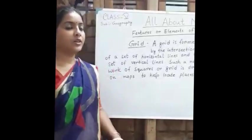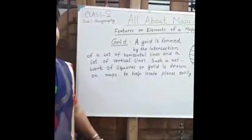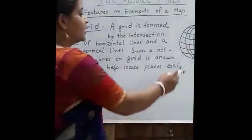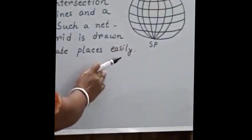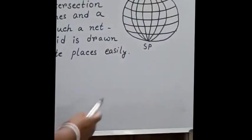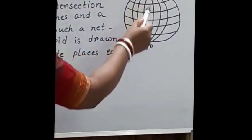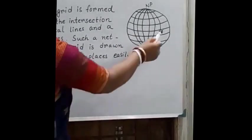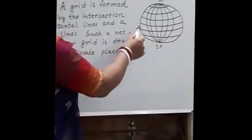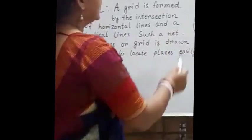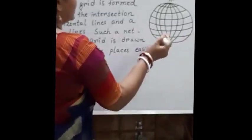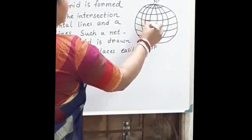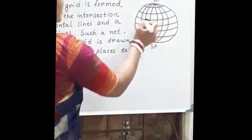Now, come to the fifth feature, that is grid. Here you can see that there are some lines which are running from North Pole to South Pole and some are running from East to West. These two lines are forming a square-like shape. This square is called grid.